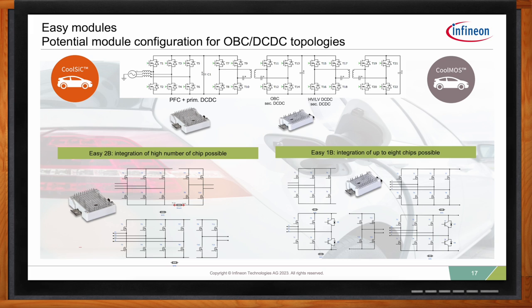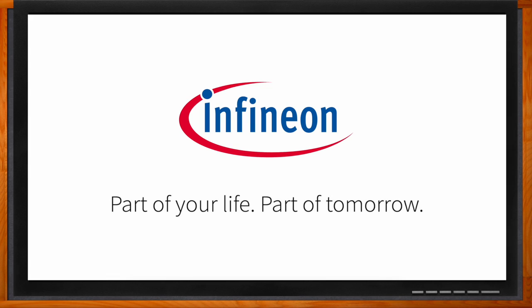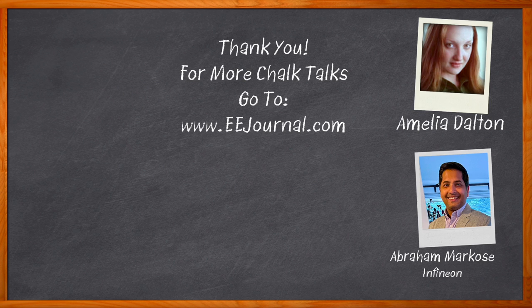What kind of performance are we talking about with these industrial-grade Easy modules? The power level capability is very broad — if you go to an Easy 3B package, you're talking upwards of closer to 300 kilowatts. Thank you so much for joining me, Abe. Thank you for having me on the show, Amelia. And before we go, don't forget to click that link for even more information about this topic from Infineon. For Chalk Talk, I'm Amelia Dalton from EEJournal.com. For more Chalk Talks, head over to the Chalk Talk section of EE Journal or to YouTube at youtube.com/eejournal.